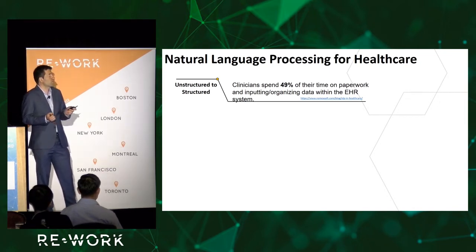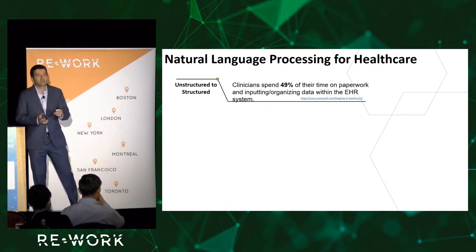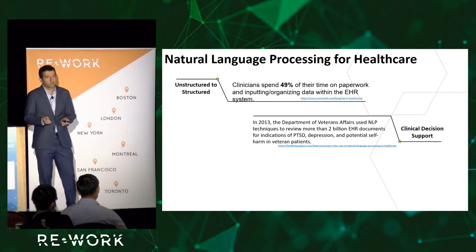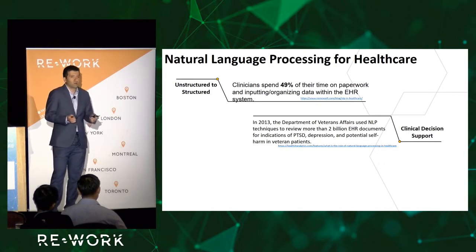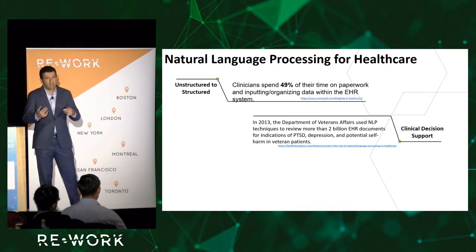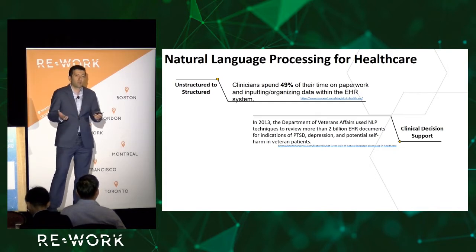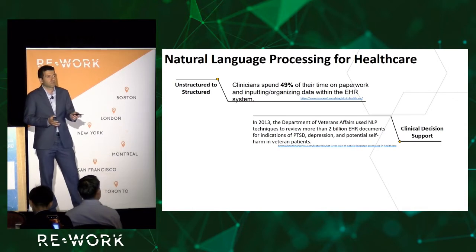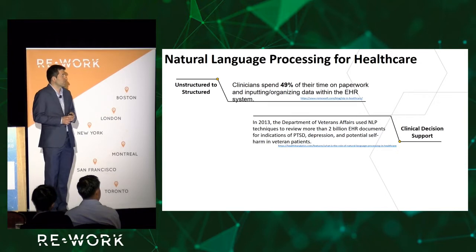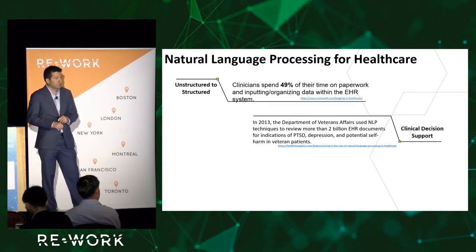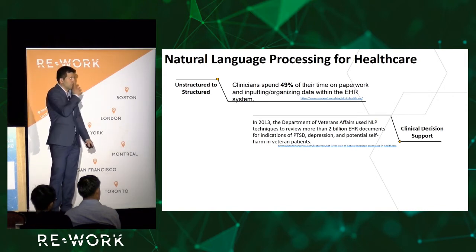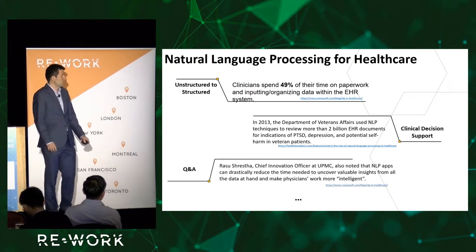The unstructured data raises challenges for NLP. For example, clinicians spend about 49 percent of their time on paperwork, organizing data so the next visit to the same patient can take advantage of it. Another very hot topic is decision support — something the FDA is very sensitive about — but there are successful examples where systems can learn patterns and rules from patient information to help clinicians make better decisions. In 2013, the Department of Veterans Affairs used NLP to review more than 2 million EHR documents to look for indications of PTSD, depression, and more, showing promising results.